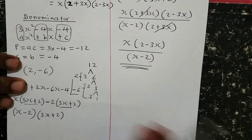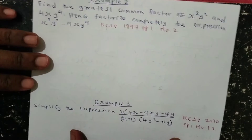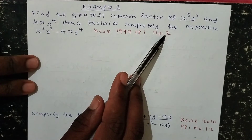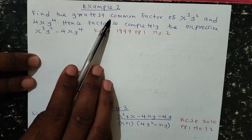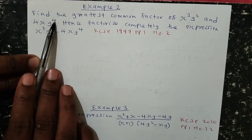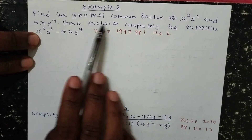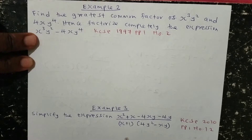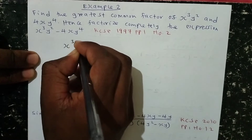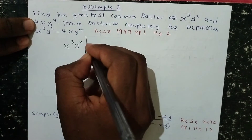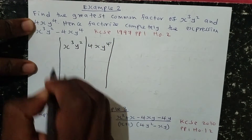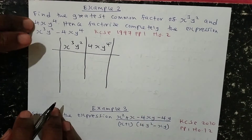Then we look at our second example, which is also a past KCSE question done in the year 1997, paper 1, question number 2. In this question, we are instructed to find the greatest common factor of x cubed y squared, and 4xy to the power of 4. Remember the greatest common factor — the other name is simply the GCD.